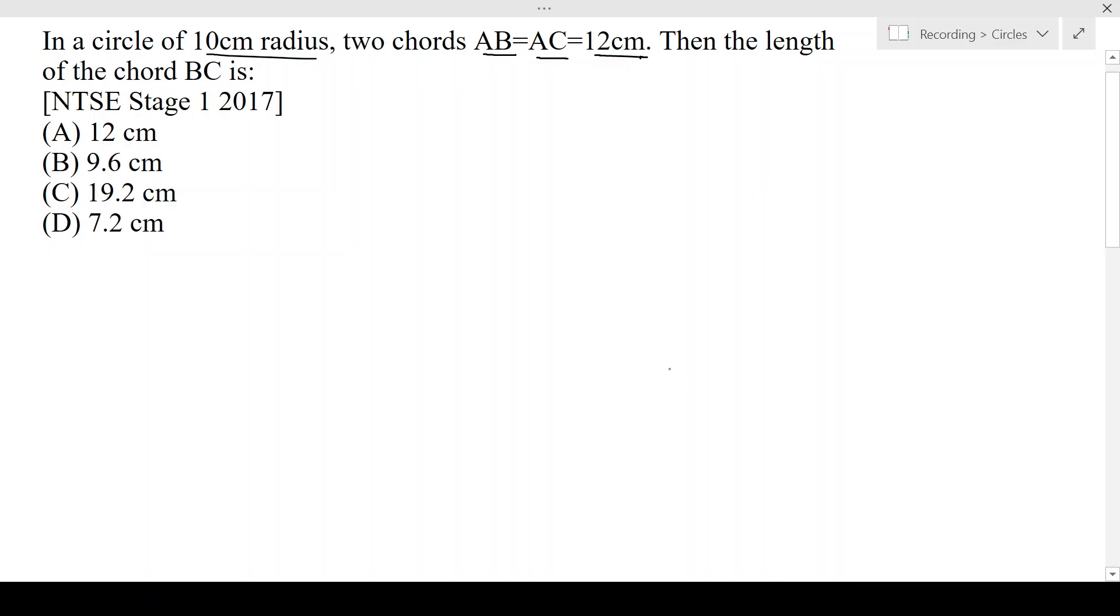So firstly let's draw a circle, forgive my drawing. This is the center O, A comes over here, let's draw B over here and C over here. So AB is equal to 12, which is equal to AC, that is also equal to 12. Now OB will be equal to OA will be equal to OC, which will all be 10, because they are all radii.